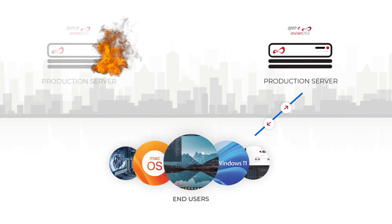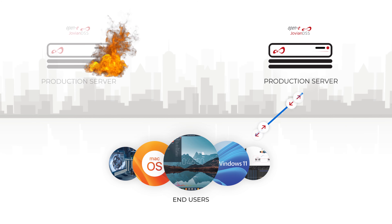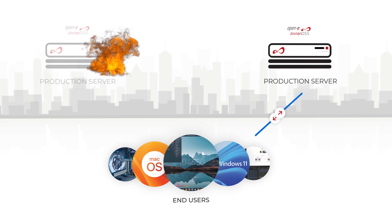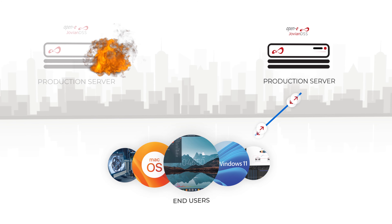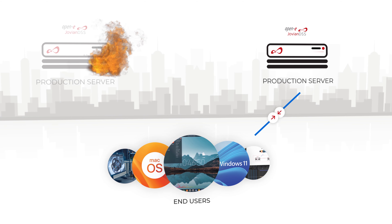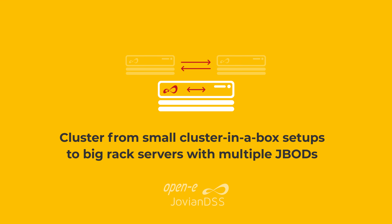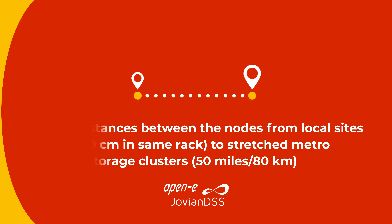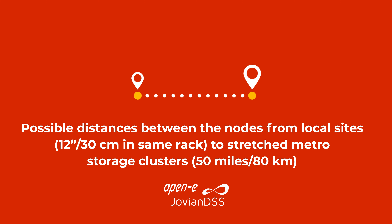What's even more unique about an OpenE Jovian DSS-based failover cluster is its flexibility and ability to scale with user needs. OpenE Jovian DSS provides support for various cluster configurations, ranging from small cluster-in-a-box setups to large rack servers with multiple JBODs. It gives you a range of possible distances between the nodes, from local sites to stretched metro storage clusters.